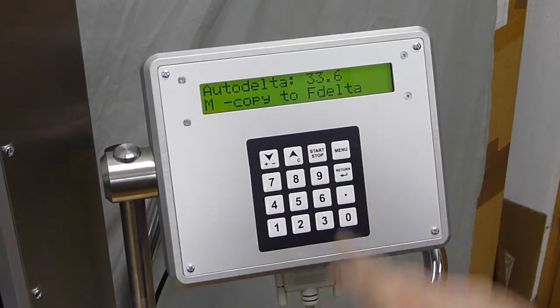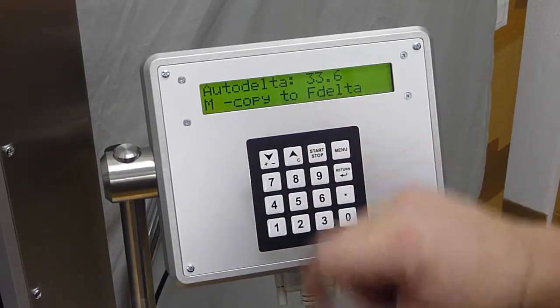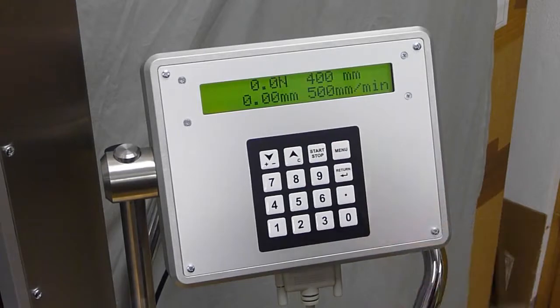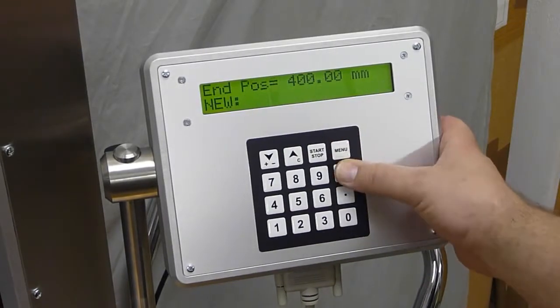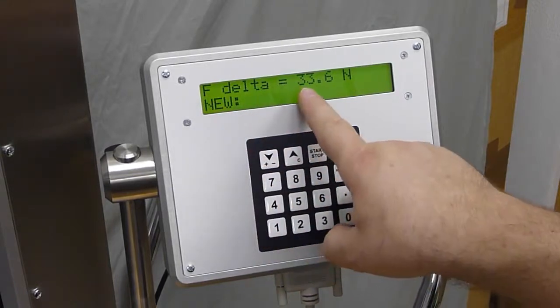33 Newton. With the M menu key we can copy this value automatically to F delta. I make this now. OK, now I will see